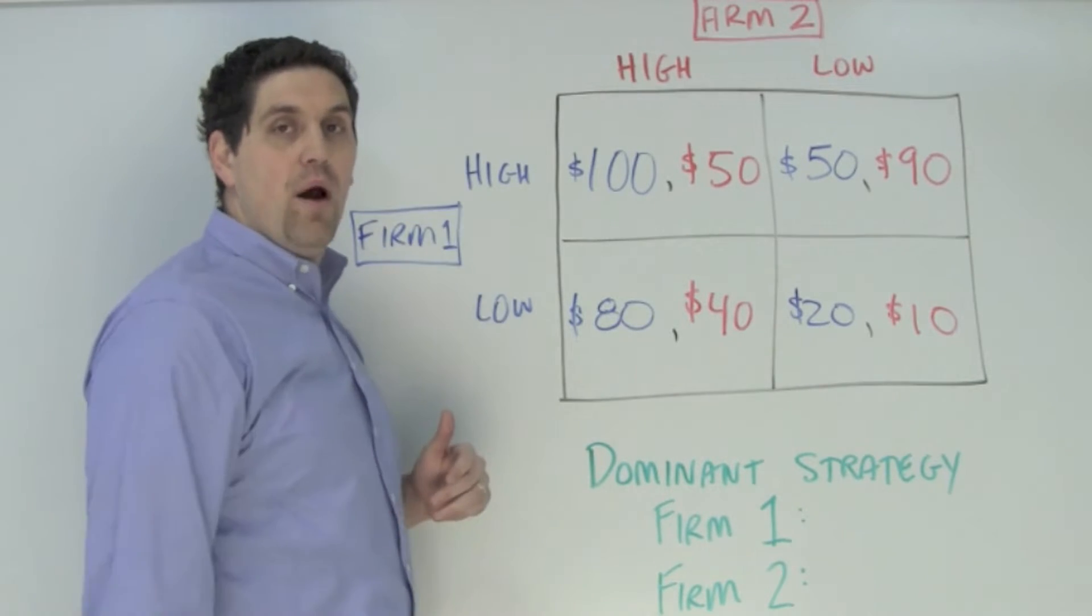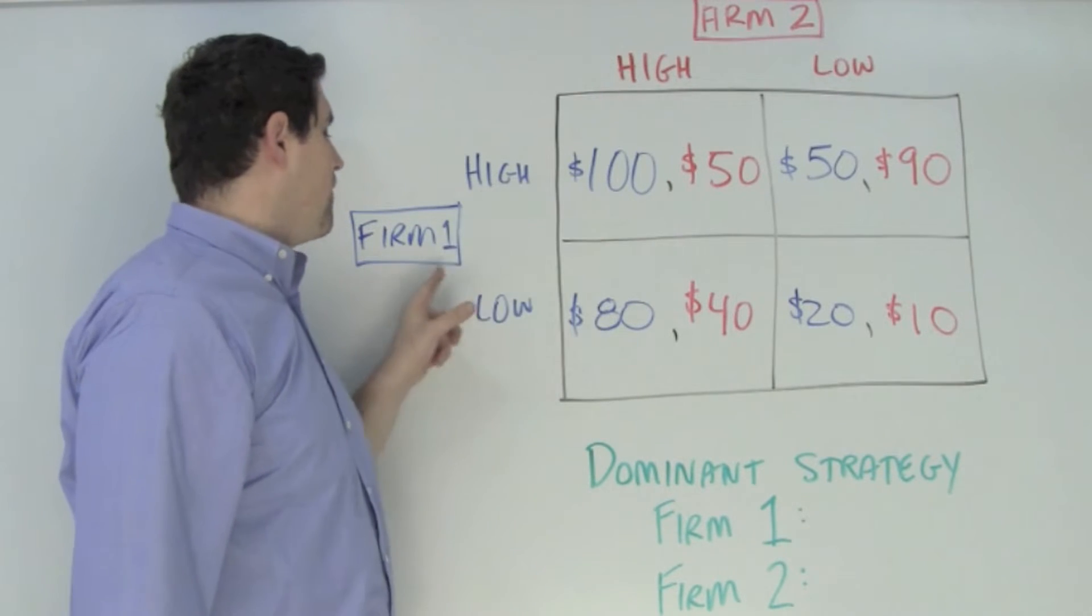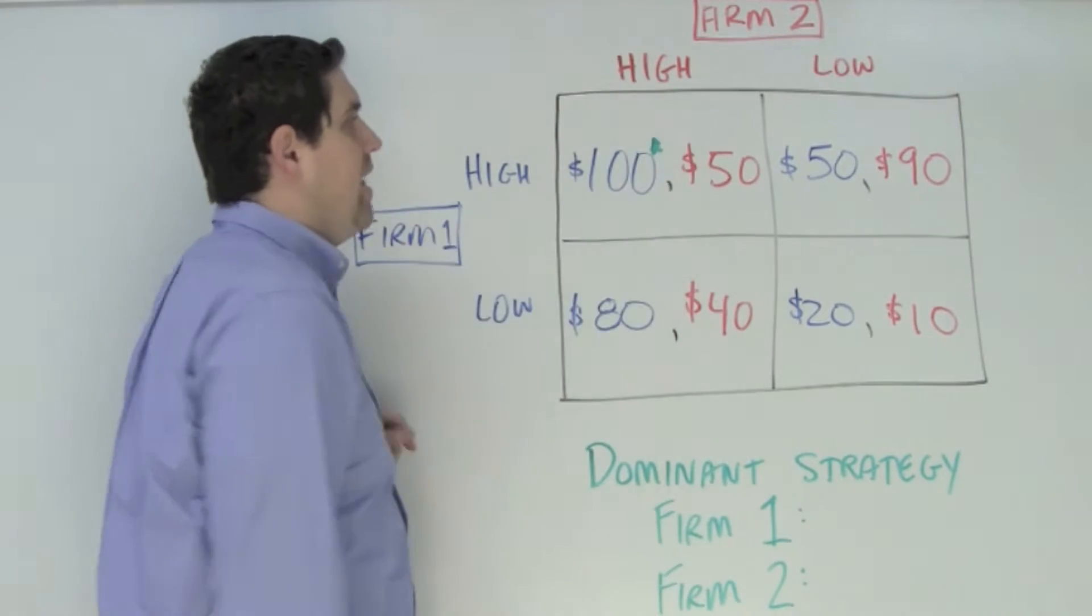Let's figure out the dominant strategy for firm one. If firm two prices high, firm one can either price high and get $100 or price low and get $80. Which one's better for firm one? Well, $100. Let's star next to that.